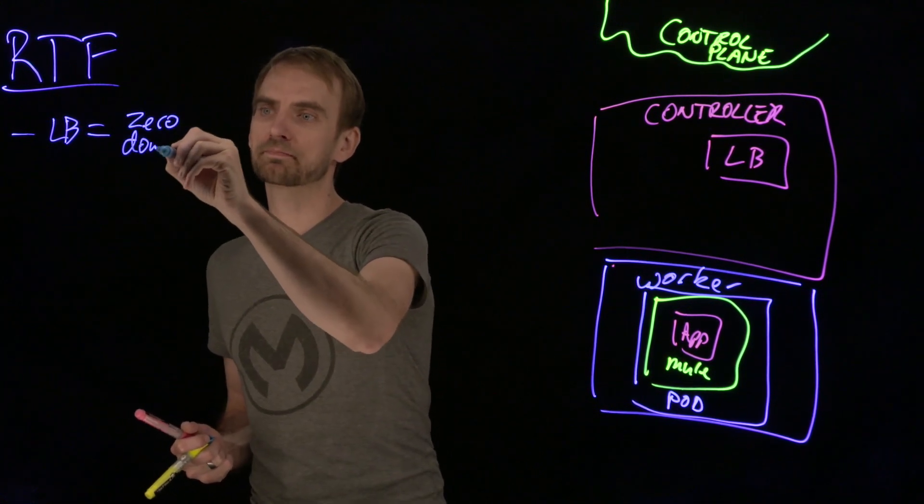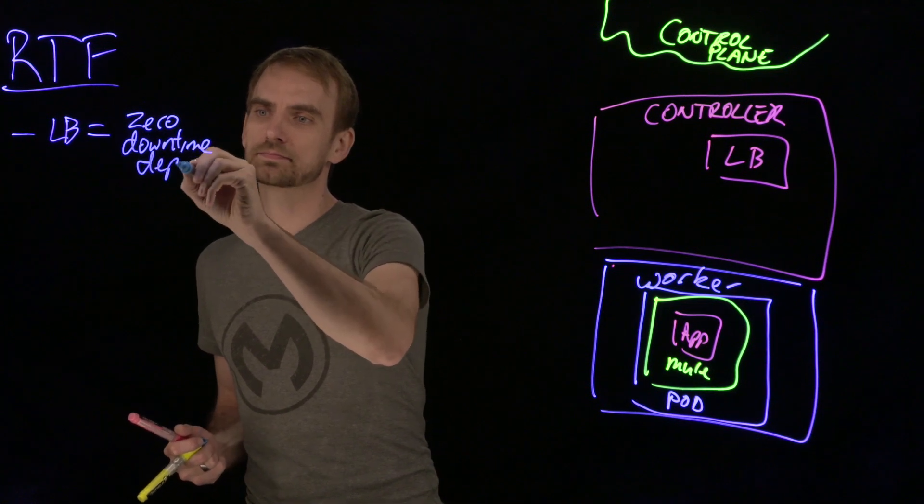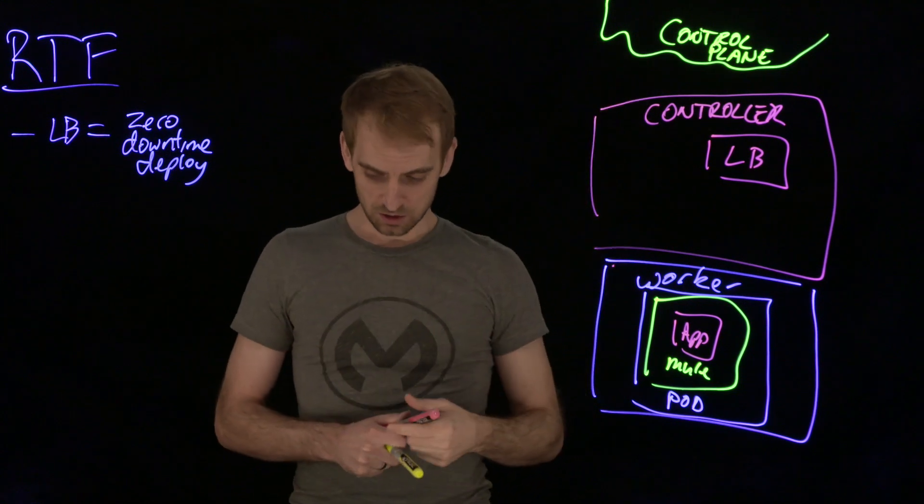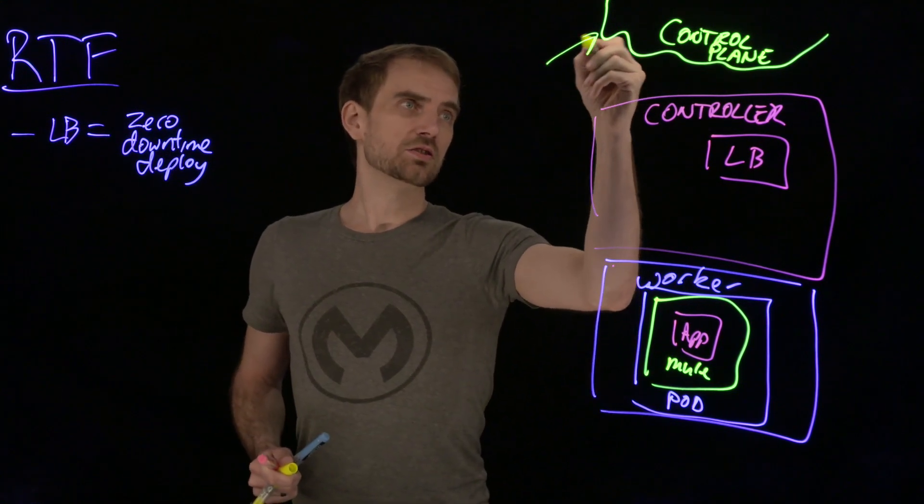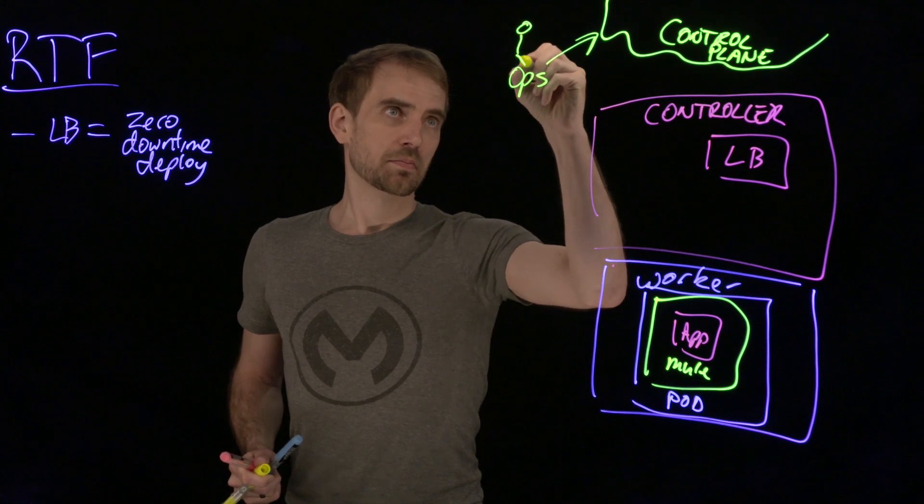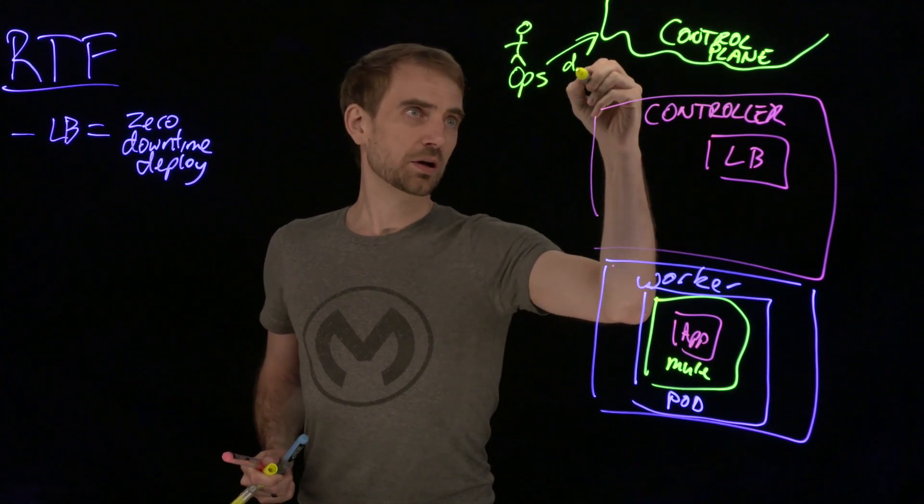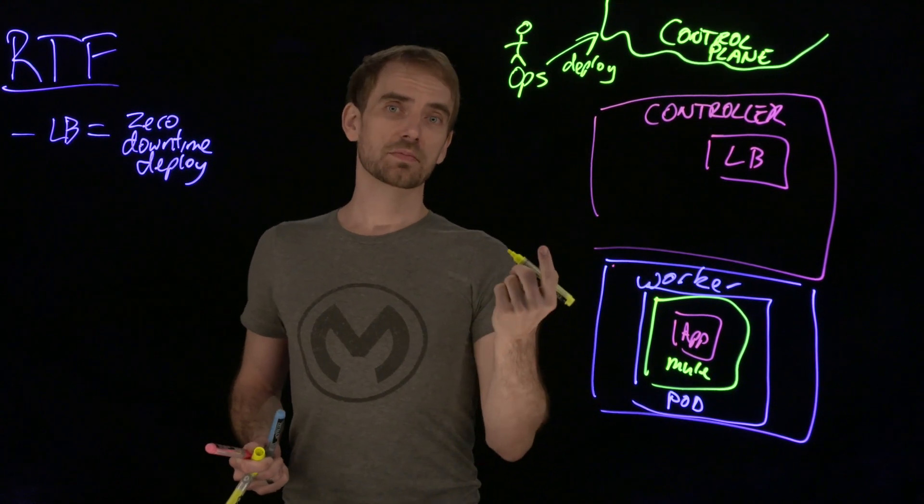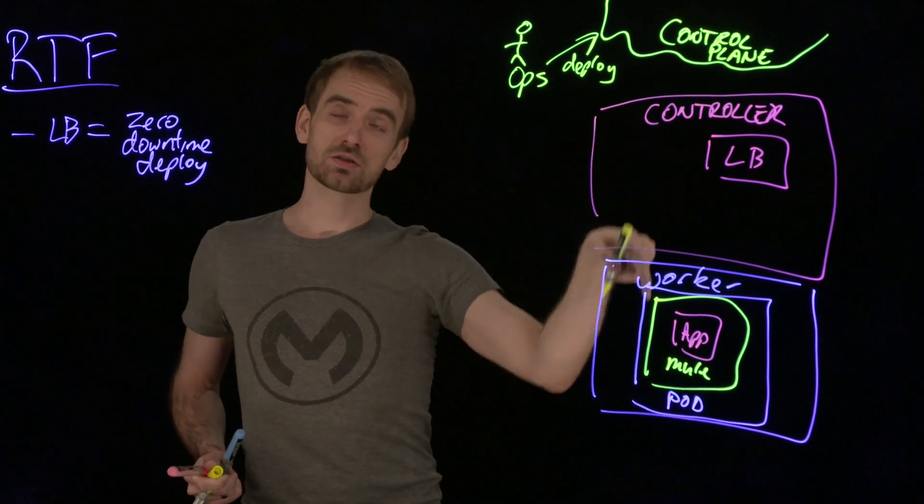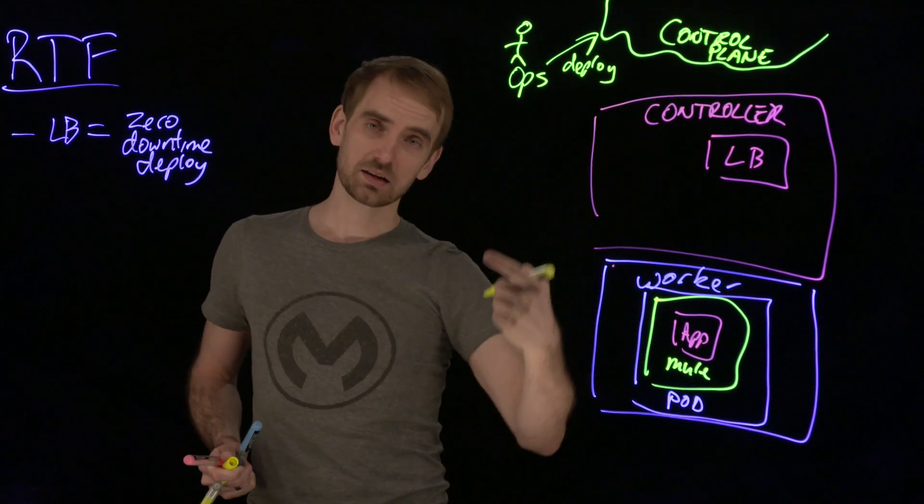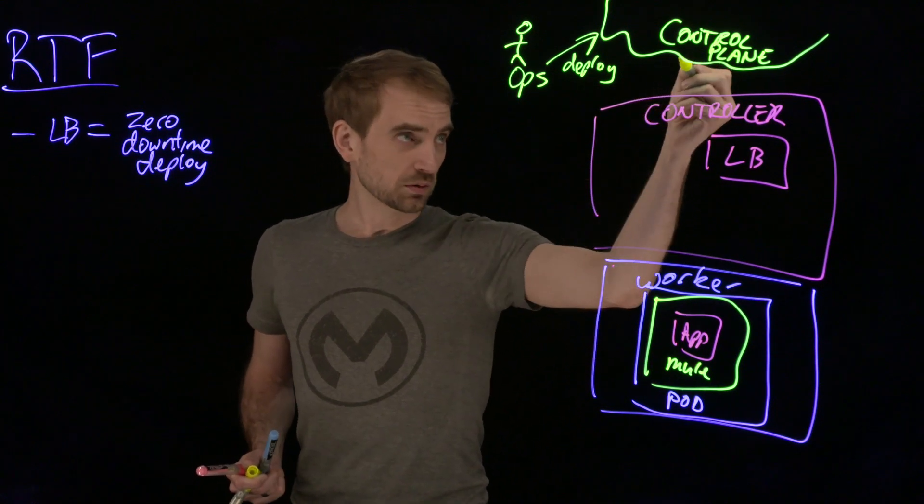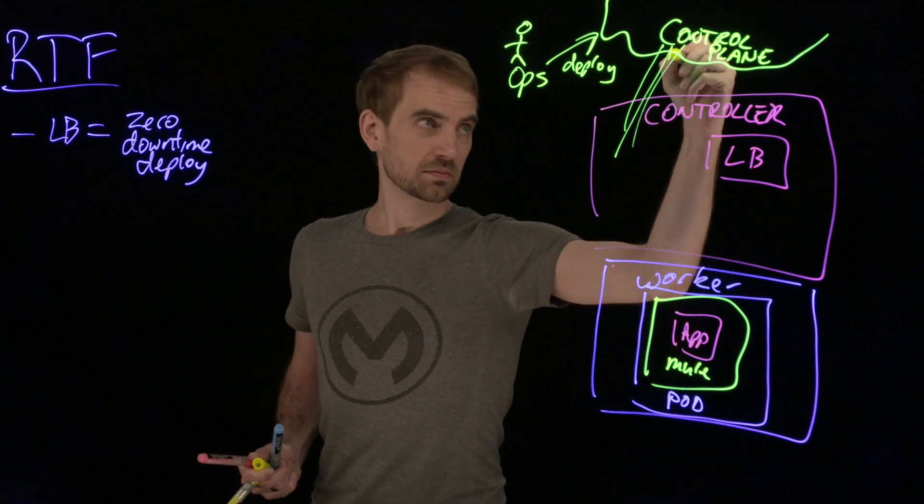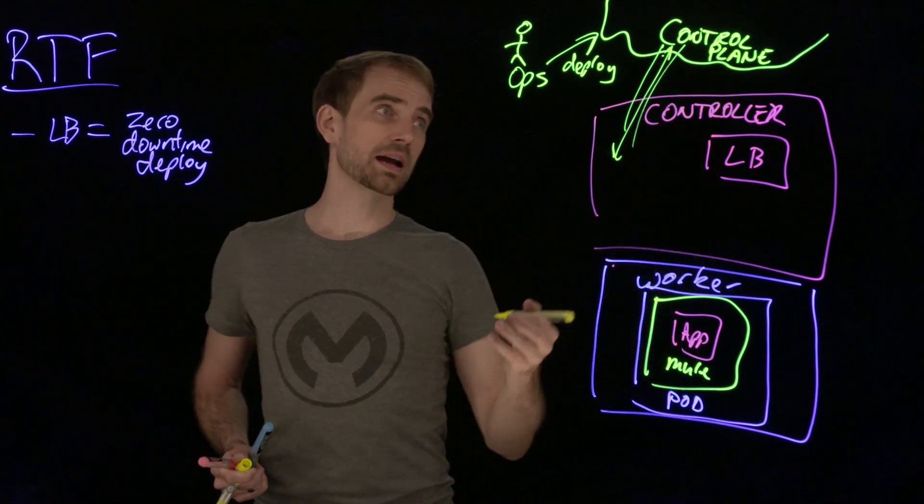When we do a deploy through the control plane, you have your ops people needing to do a deploy. They can script this of course, but you could log into Runtime Manager and issue a request to do a deploy to the deployment target, which is the Runtime Fabric.